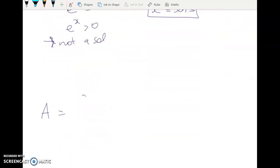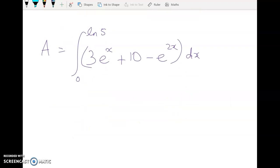So the area, which we'll call a, is equal to this integral between the natural log of 5 and 0 of this. So pretty easy integration in this question, actually. I think all the thinking comes first up.